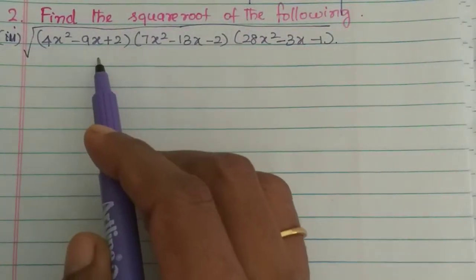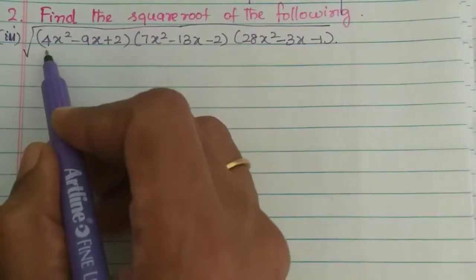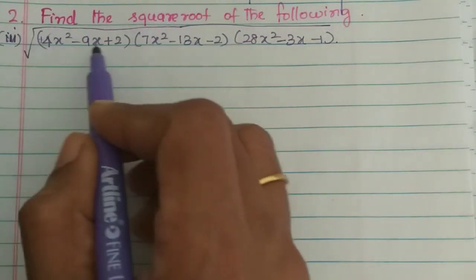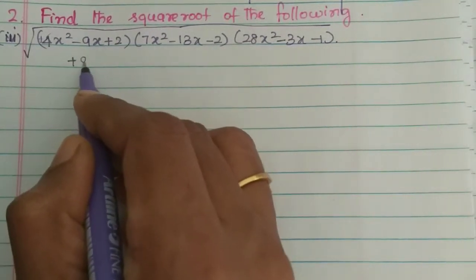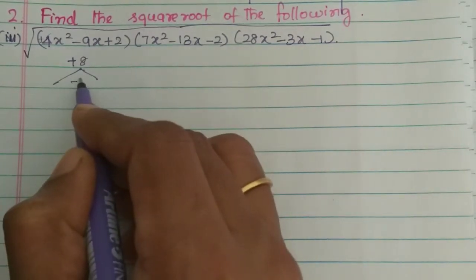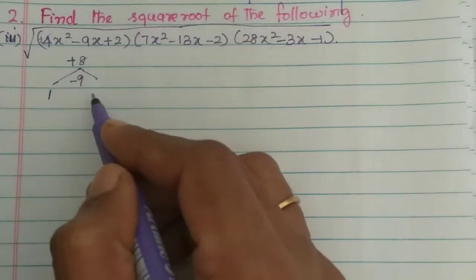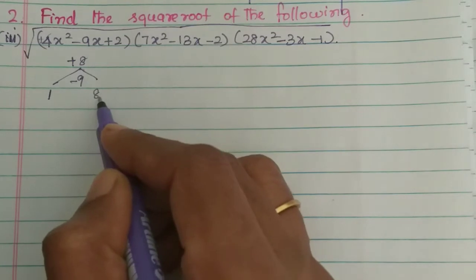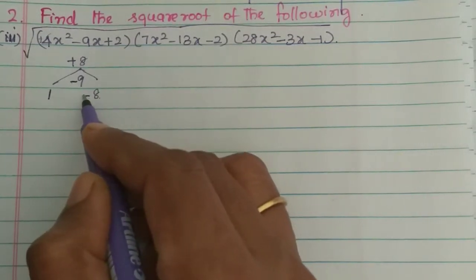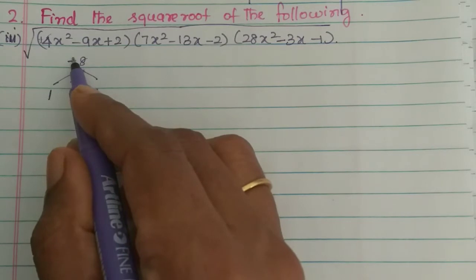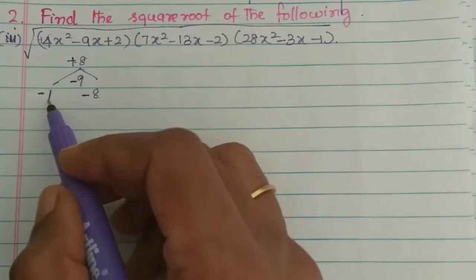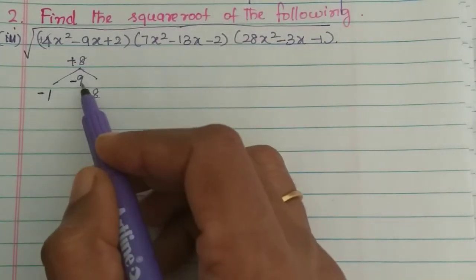Now we will factorize. For the first expression, 4 times 2 is 8. In the middle we have minus 9. So 8 plus 1 is 9. The bigger number has the minus sign, so we have minus 1 and minus 8, giving minus 9.